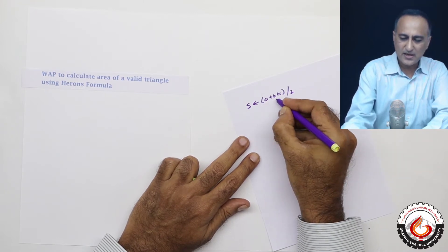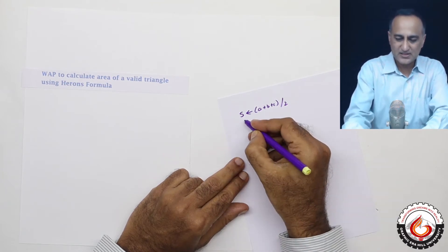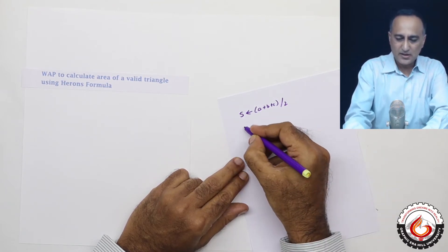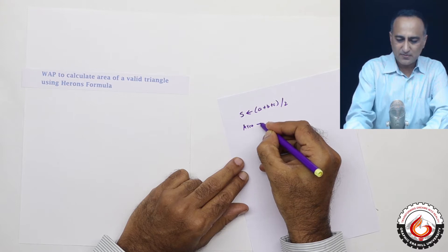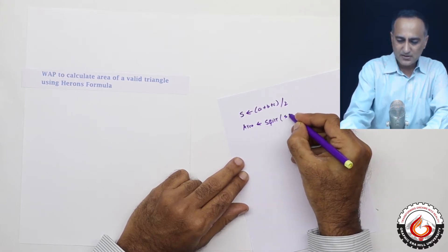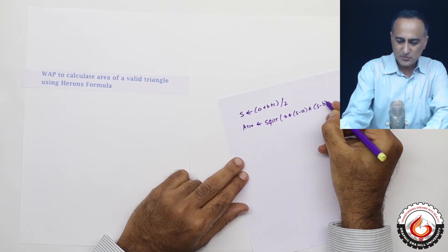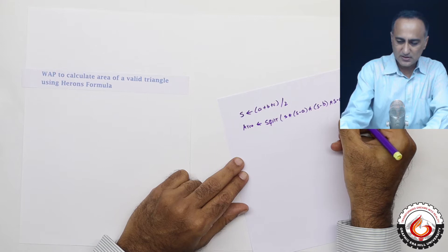These three A, B and C stand for the sides of a triangle. S stands for the perimeter and area is given by square root of S into S minus A into S minus B into S minus C.